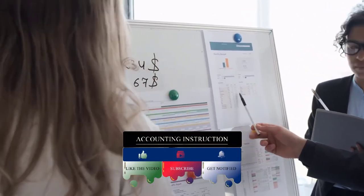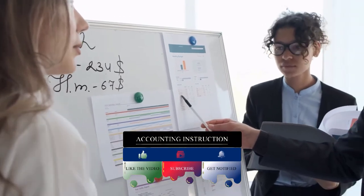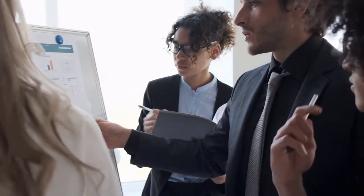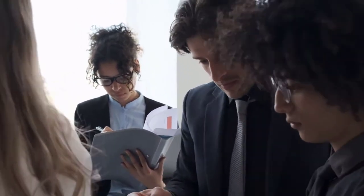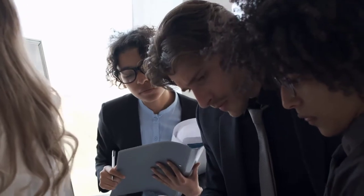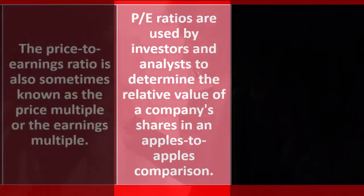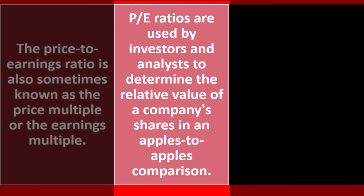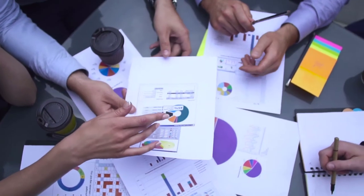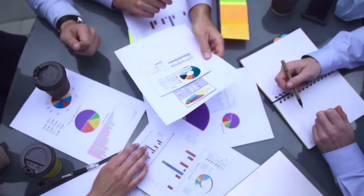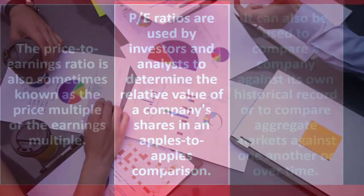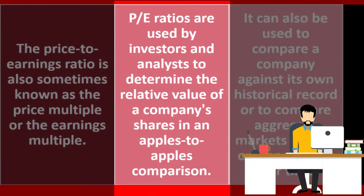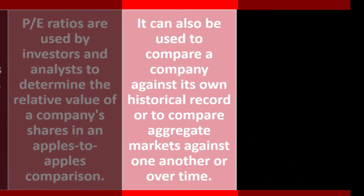These ratios are quite important when we want to compare things. This is applicable in many areas — for example, measuring job performance of athletes involves ratio analysis to make comparisons we couldn't do otherwise. The PE ratios are used by investors and analysts to determine the relative value of a company's shares in an apples-to-apples comparison, helping us compare across different companies to determine if the price is appropriate for investment decisions.